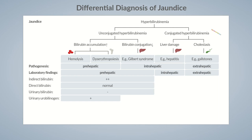In prehepatic jaundice, hepatocytes and bile ducts aren't involved. So serum levels of transaminases, alkaline phosphatase, and gamma-glutamyl transferase are normal, provided there is no concomitant disease.